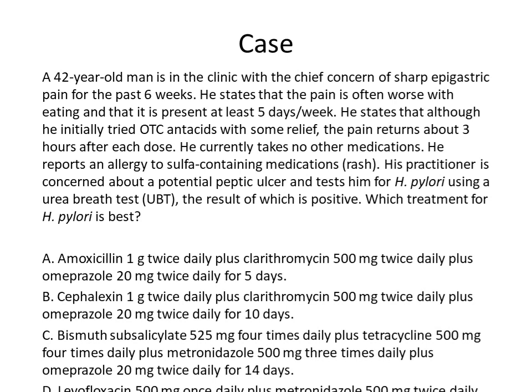His practitioner is concerned about a potential peptic ulcer and tests for H. pylori using a Urea breath test, which comes back positive. The patient has a peptic ulcer caused by H. pylori. Treatment of H. pylori consists of an anti-secretory drug and two antibiotics for 14 days.